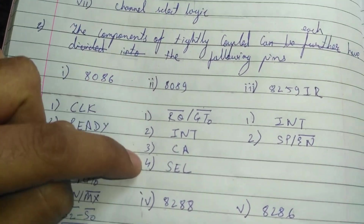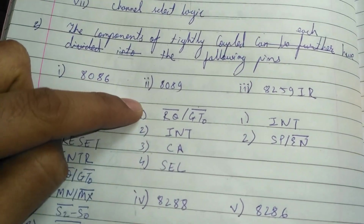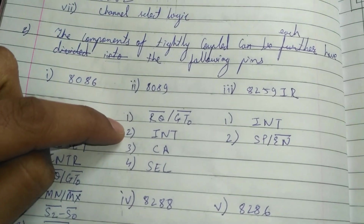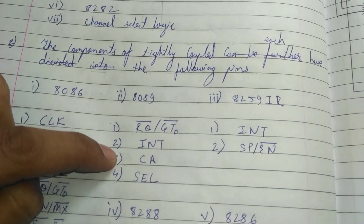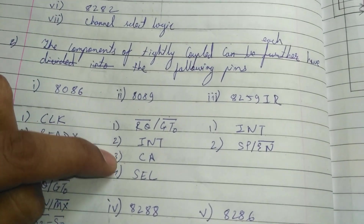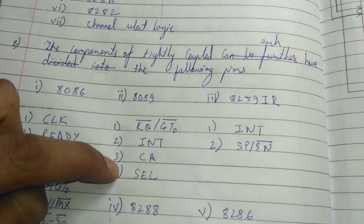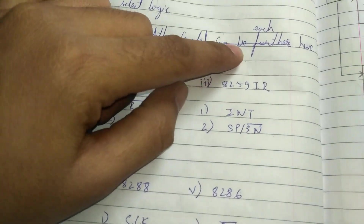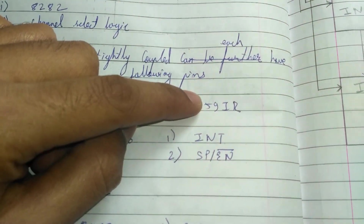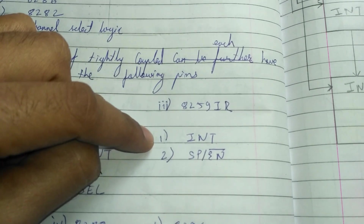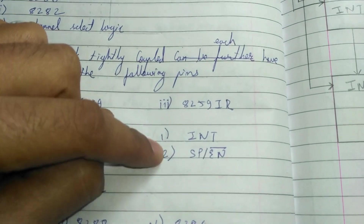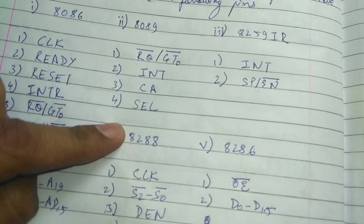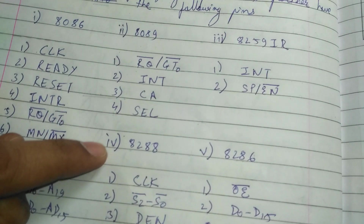The 8089 has four pins: the first pin is RQ bar slash GT0 bar, the second pin is INT, the third pin is CA, and the fourth pin is SEL. Our third component is 8259 IR; its first pin is INT and the second pin is SP slash EN bar.